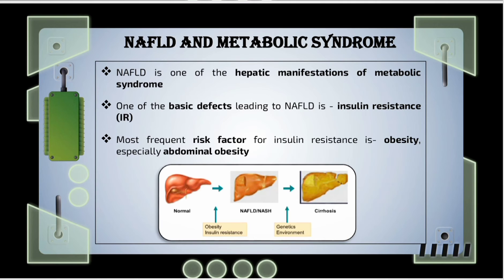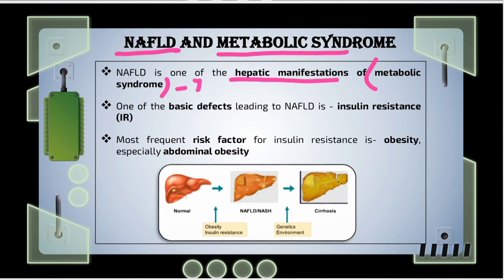Now let's discuss the linkage between NAFLD development and metabolic syndrome. NAFLD is one of the hepatic manifestations of metabolic syndrome, which also includes diabetes mellitus. The basic defect behind NAFLD development is insulin resistance — resistance to uptake of blood sugar into muscles, fat, and liver cells. The most frequent risk factor for insulin resistance is obesity, and most commonly abdominal obesity leads to the development of insulin resistance.